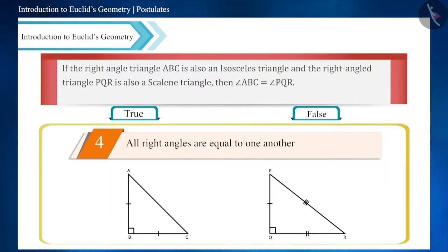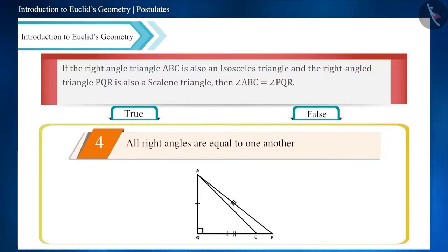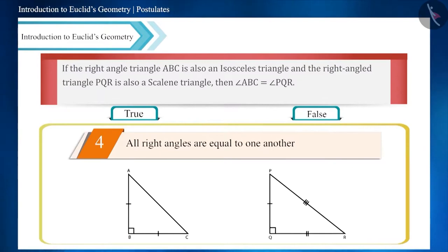If you place these two triangles one on top of each other with angle B and angle Q overlapping each other, then you can see that the angles are equal to each other, even if the triangles are not congruent to each other. Therefore, the given statement is true.